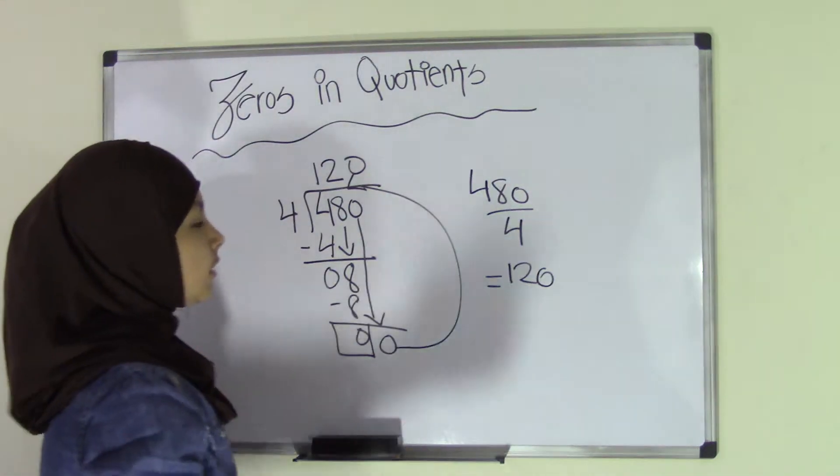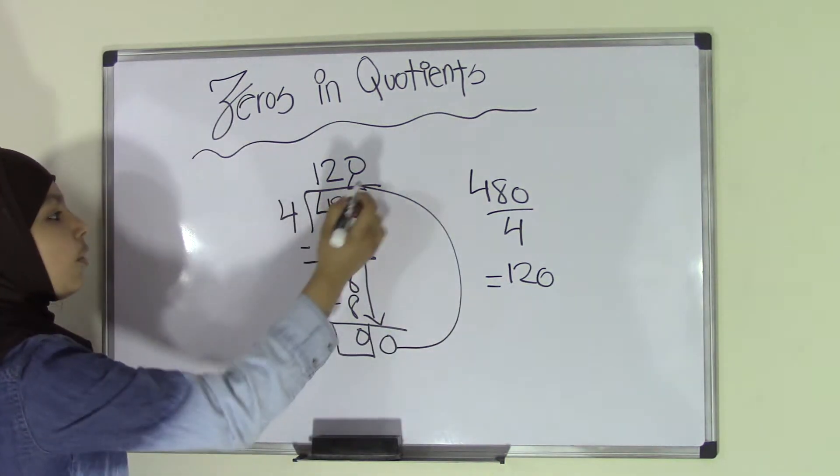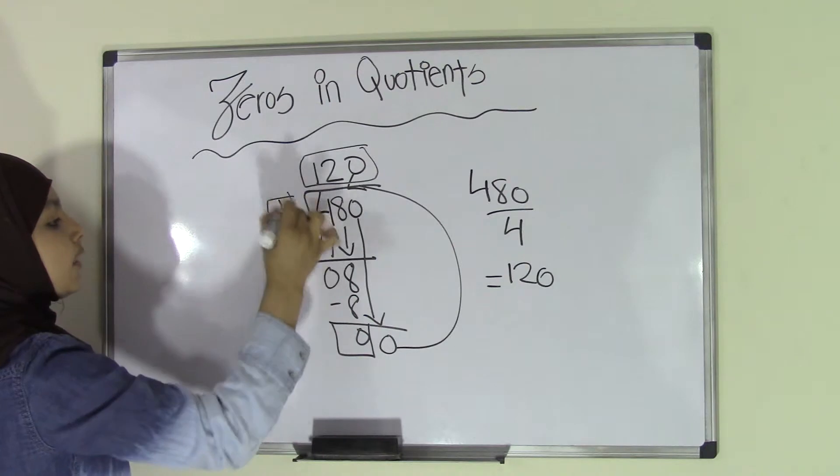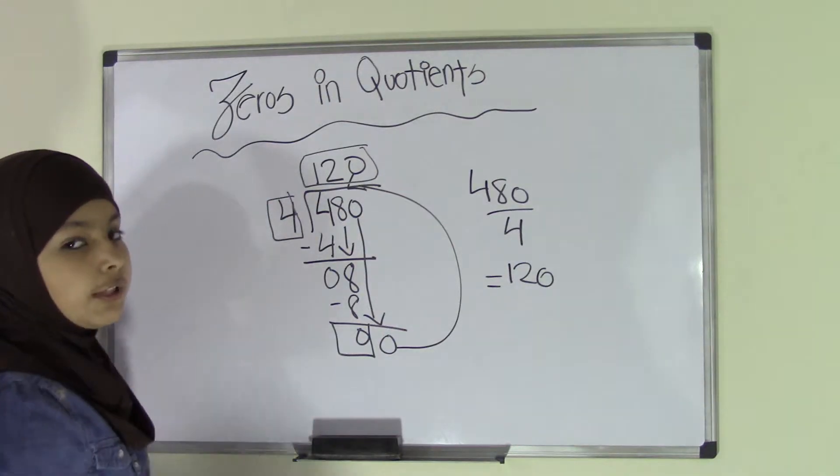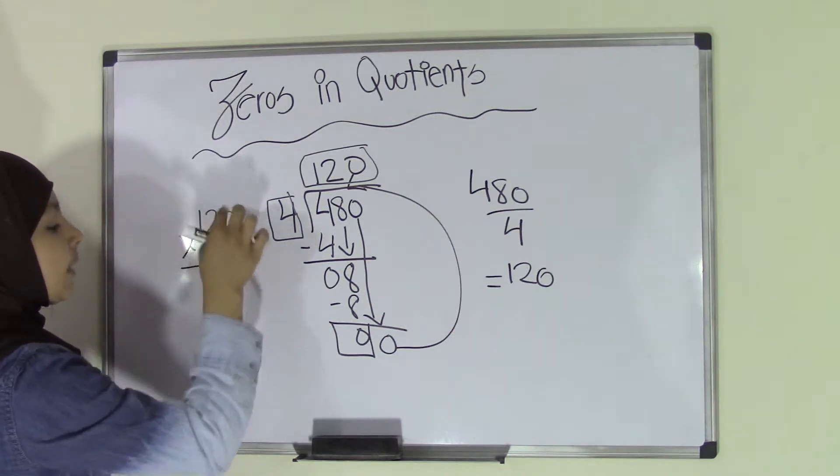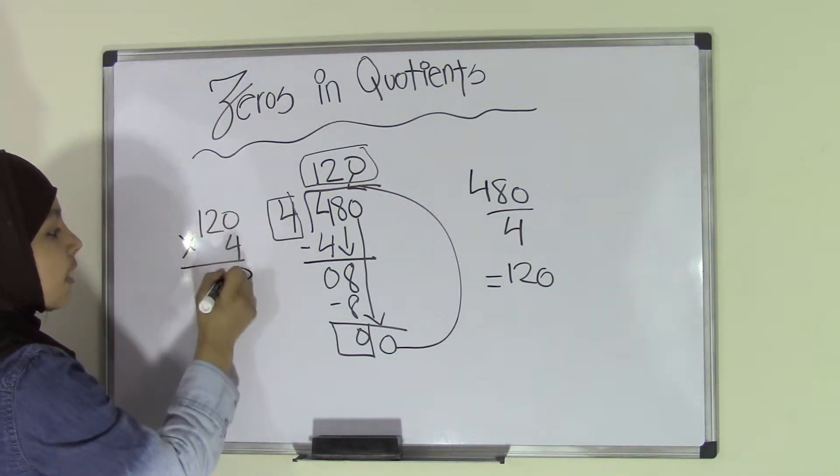Now if you're going to check your answer, which is a good idea, you can just go back and look at your quotient and multiply that by your divisor to get your dividend. If you get your dividend, that means your answer is correct. So if you go back and do 120 times 4, we know that any number by 0 would always equal 0. 4 times 2 is 8 and 4 times 1 is 4.